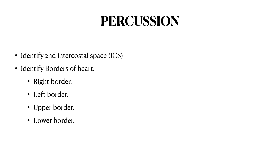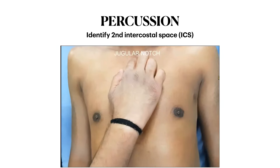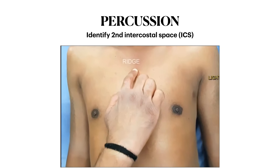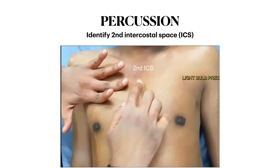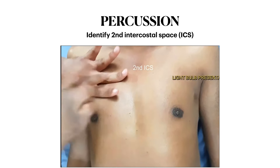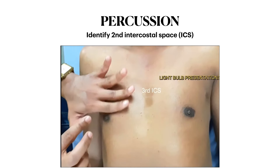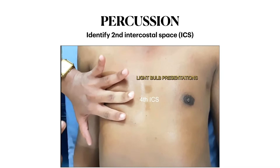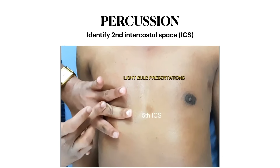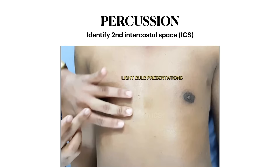The third step is percussion. In percussion, first identify the second intercostal space, then try to identify the right border, left border, upper border, and lower border of the heart. To identify the second intercostal space, first identify the jugular notch and move your finger downward slightly until you find the ridge, then slide your fingers horizontally — that is your second intercostal space. Move the finger slightly downward to find the third rib; below it is the third intercostal space. Repeat the steps to find the 4th and 5th intercostal spaces, and correlate the apex beat position from the palpation part.